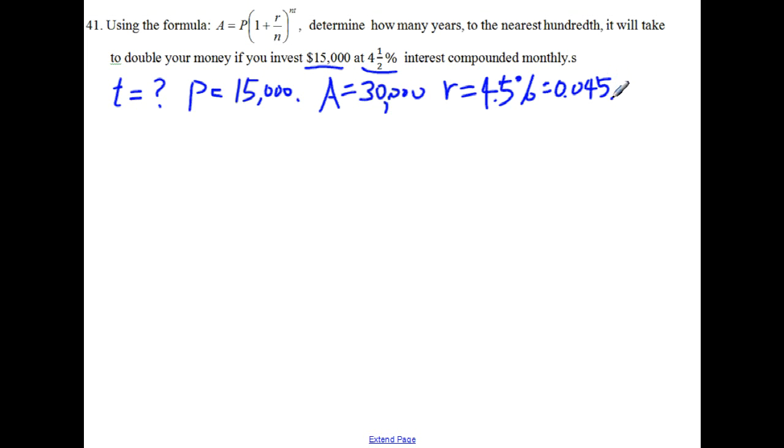So and then what is left? N. N is the number of times, N is the number of times the interest is compounded every year. So that is given here.